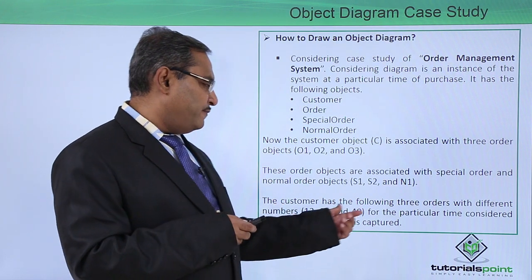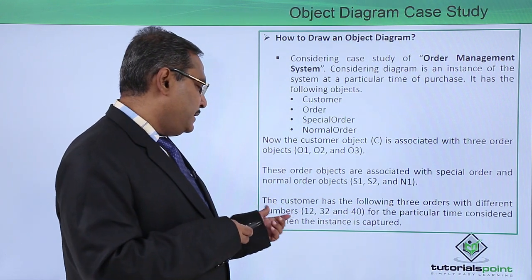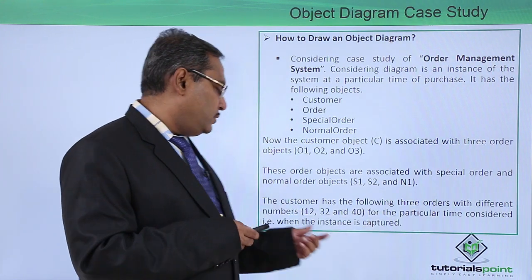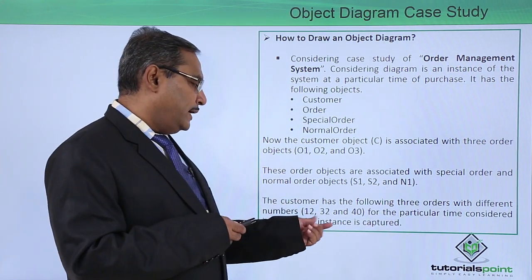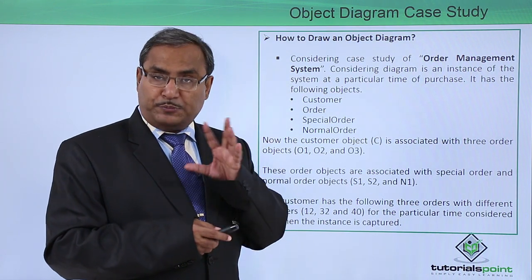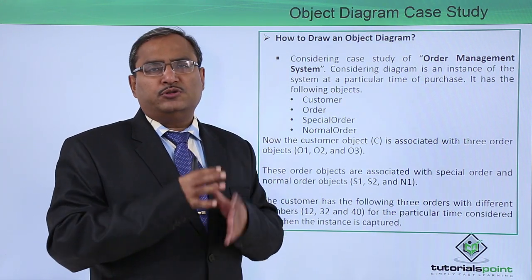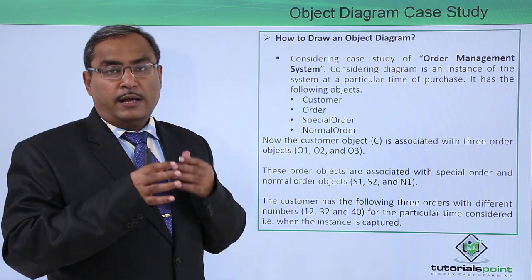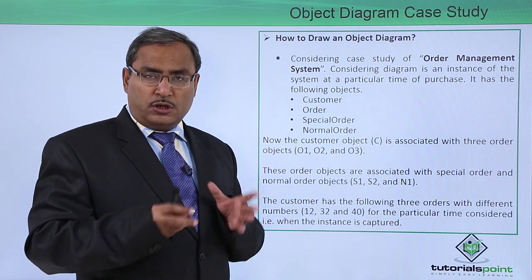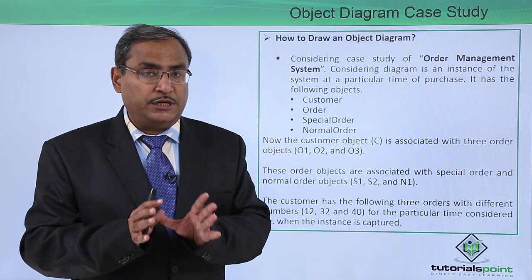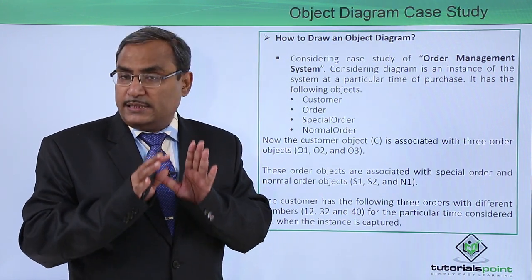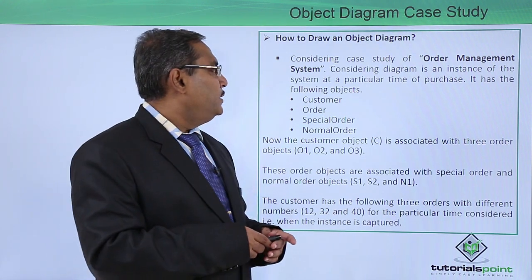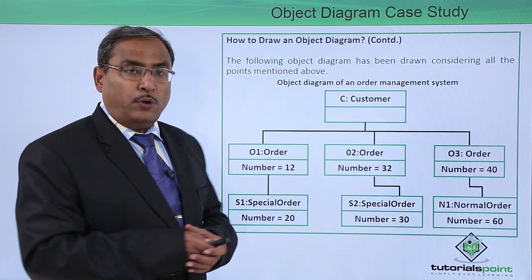The customer has three orders with different numbers — 12, 32, and 40 — at the particular time considered, that is when the instances were captured. Systems have dynamic values, so at different instants of time, different attributes will have different values. Whatever values are captured here were existing at a certain instant of time.